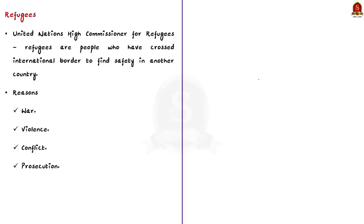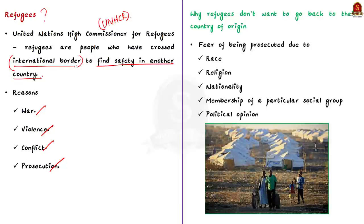First of all, who are refugees? According to the United Nations High Commissioner for Refugees, that is the UNHCR, refugees are people who have fled war, violence, conflict or persecution and have crossed an international border to find safety in another country. The refugees are unable or unwilling to return to their own country due to various reasons like the fear of being persecuted due to their race, religion, nationality, membership of a particular social group or political opinion.